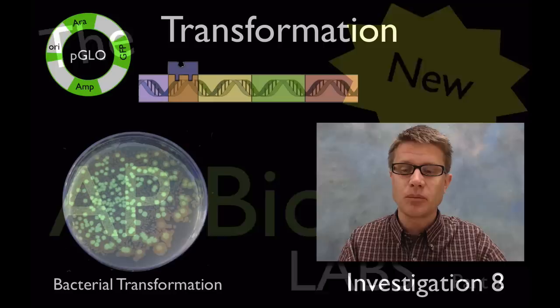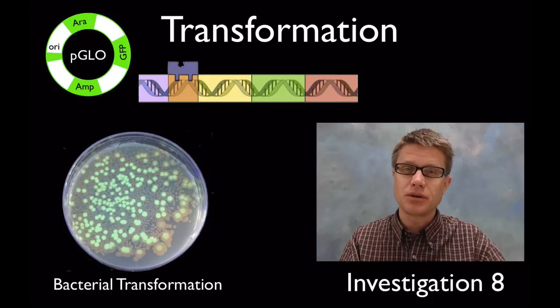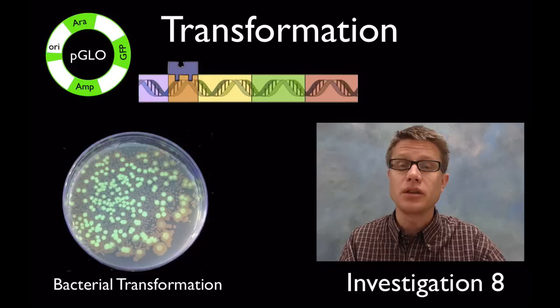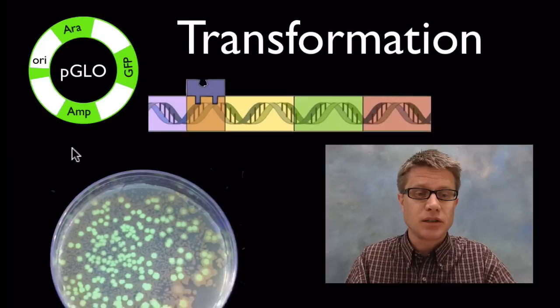In lab eight what you're doing is bacterial transformation. Transformation is a process by which bacteria can take in DNA from their environment. Usually they do that taking in plasmids which are little circles of DNA.